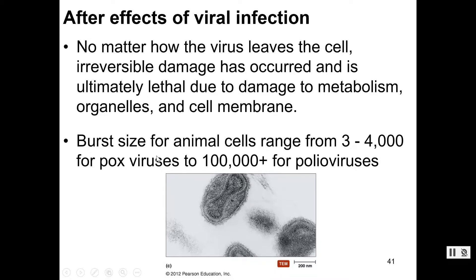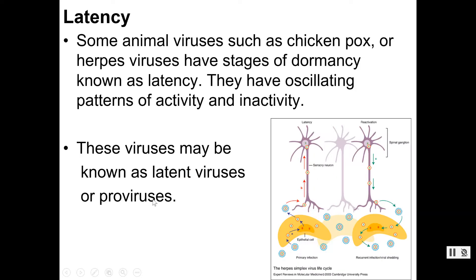Burst size — this is a eukaryotic virus, so an animal cell. Eukaryotic cells are much larger than prokaryotes and bacteriophage. Burst size can be between 3,000 to 4,000. Polio viruses can reach 100,000, and even up to 50 million. So that can be a big deal.